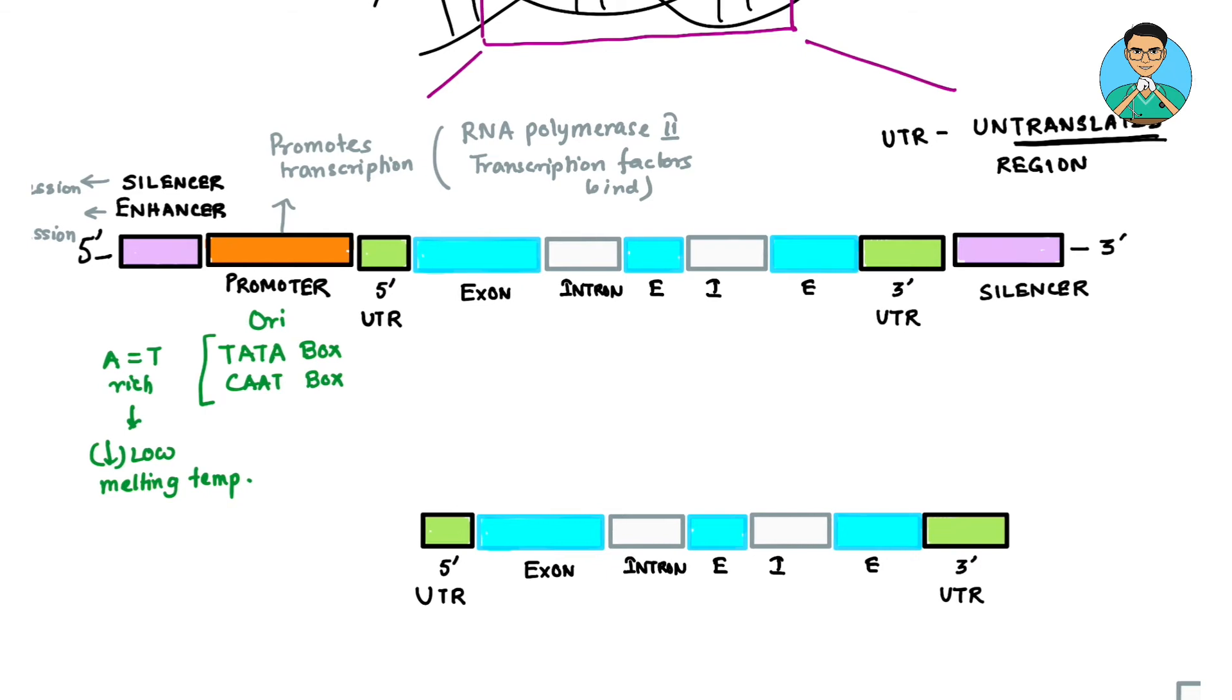Now what happens? From DNA we get the RNA by means of transcription. Now transcription starts just after or downstream to promoter. So here transcription starts.